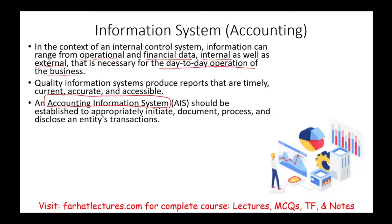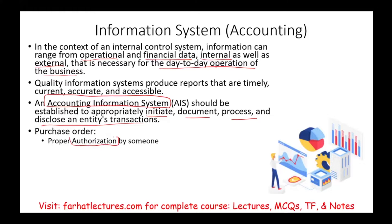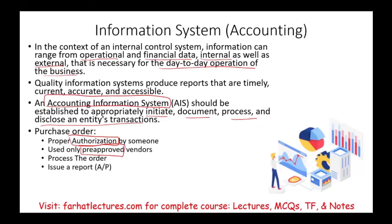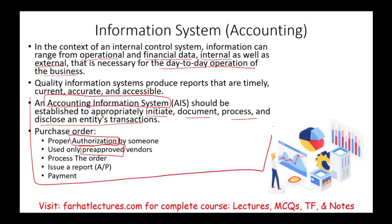The AIS should be established to appropriately initiate, document, process, and disclose an entity's transactions. For example, think about a purchase order: it starts with proper authorization — no purchase order can be processed without being authorized. We can only purchase from pre-approved vendors, meaning vendors already reviewed and accepted by top management, not relatives or personal connections. Then we process the order through the AIS, issue a report, make the payment, and disclose information about the payment.